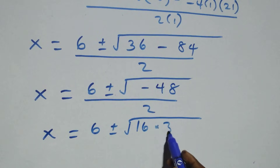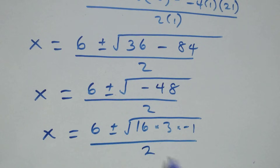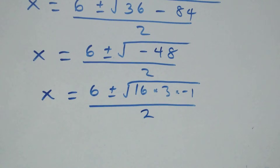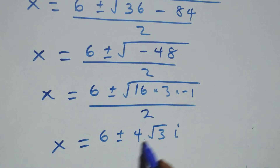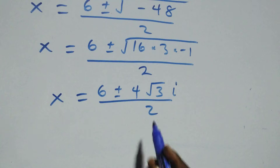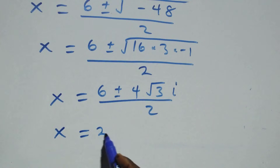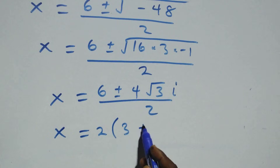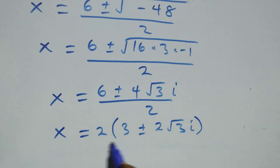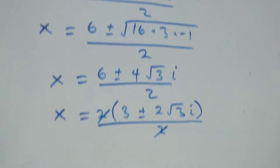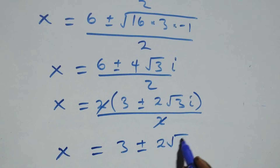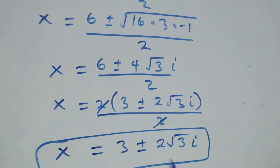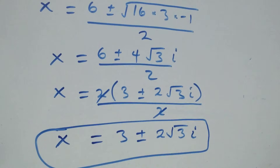We write minus 48 as 16 times 3 times minus 1. Taking out the square root of 16, that is 4, we have x equals to 6 plus or minus 4 times root 3 times i, over 2. This simplifies to x equals to 3 plus or minus 2 root 3 i. These are two complex solutions from Case 1.